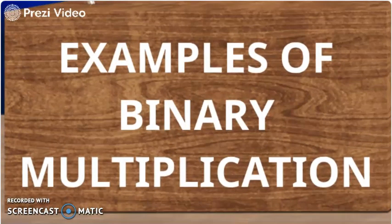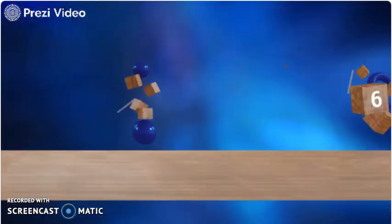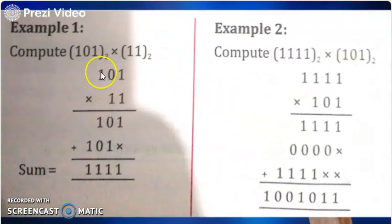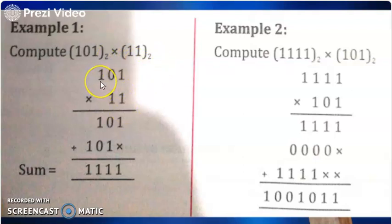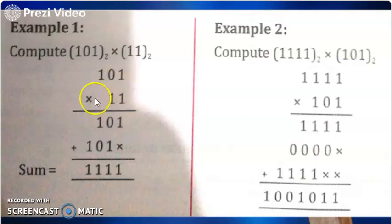I am going to explain binary multiplication with some examples. In the first example, 101 base 2 is multiplied with 11 base 2. When 1 is multiplied with 101, it gives 101 as a result. Again, when 1 is multiplied with 101, it gives 101 as a result. Now adding both the results, we will get 1111 as a result.